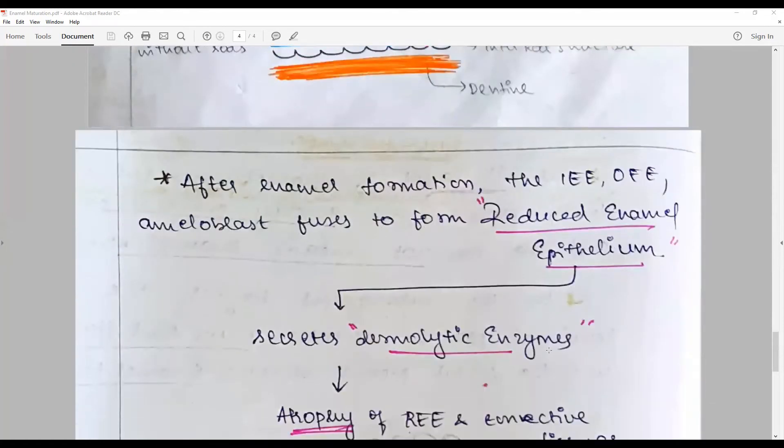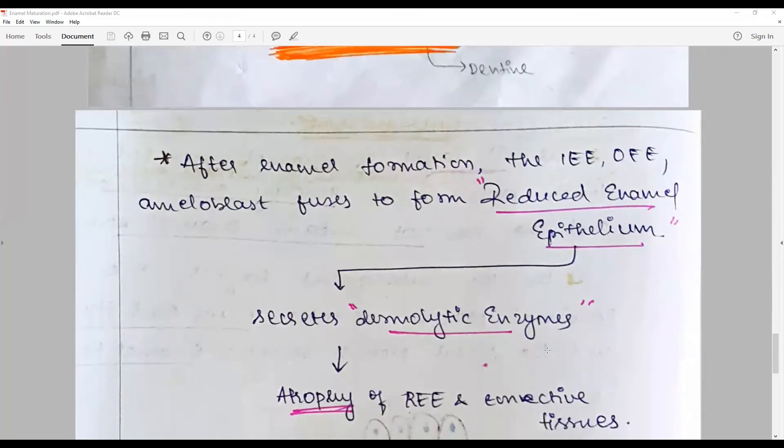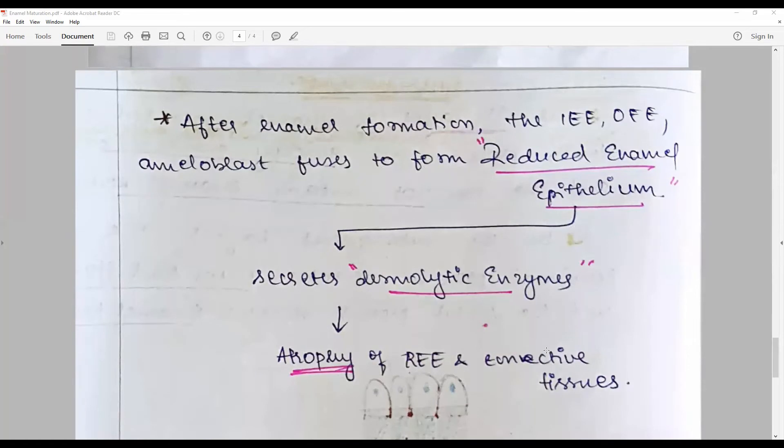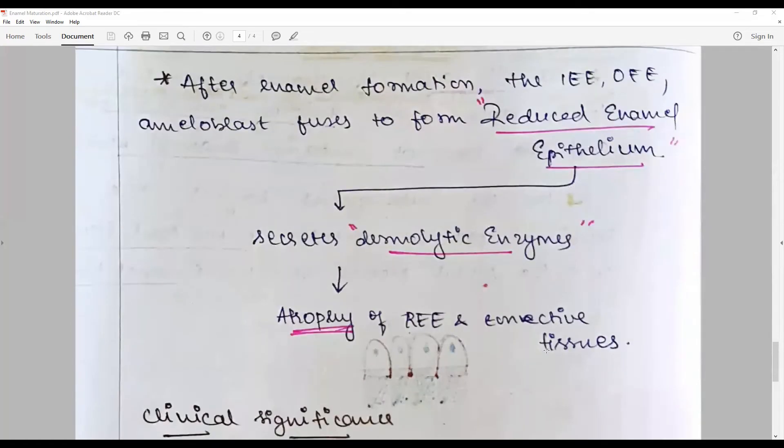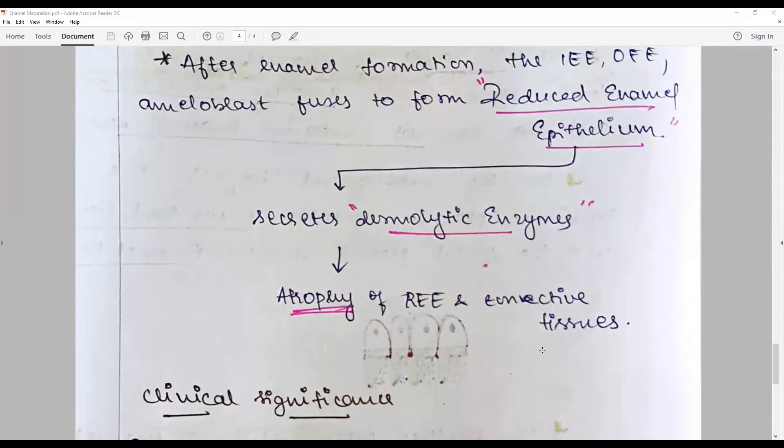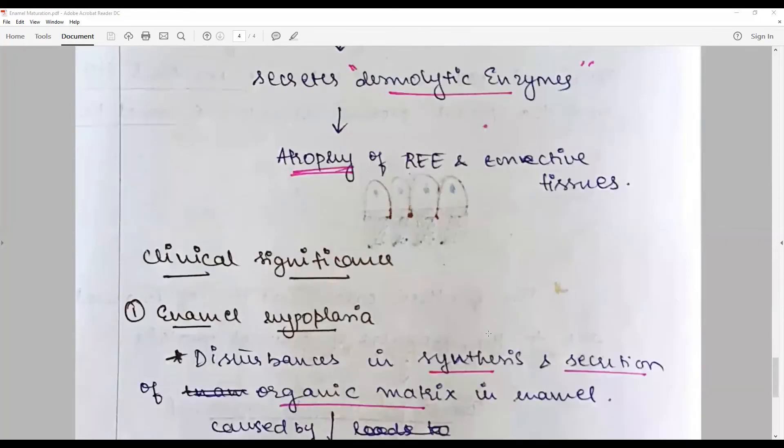With this reduced enamel epithelium, it proceeds to the desmolytic stage. They are responsible for the secretion of desmolytic enzymes that are responsible for atrophy of reduced enamel epithelium connective tissue. This has a role to play in the protection of enamel, as well as during the tooth eruption process, and in the formation of junctional epithelium.